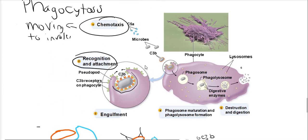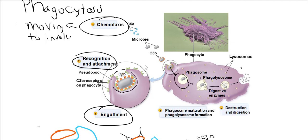Now the macrophage or the neutrophil have attached to the pathogen, bound to the receptors, and the phagocyte will engulf the pathogen. As you can see in this picture, the pathogen enters into the phagocyte and enters into this membrane-bound vesicle called a phagosome. The phagosome is basically just this membrane-bound vesicle that transports the pathogen into the phagocyte.